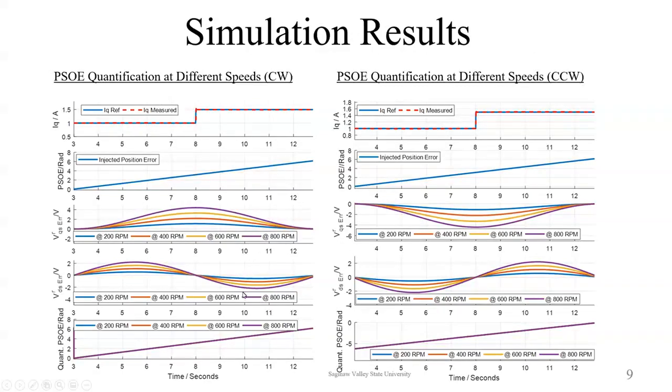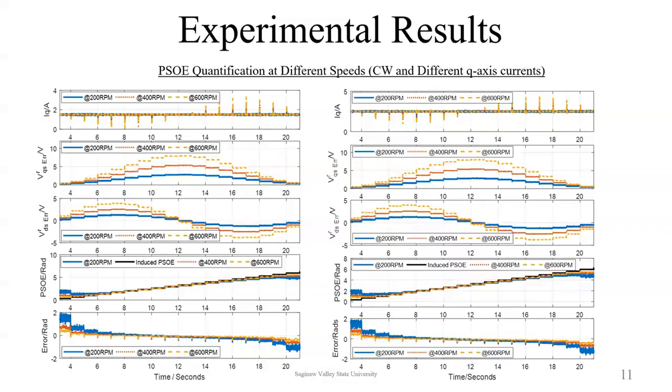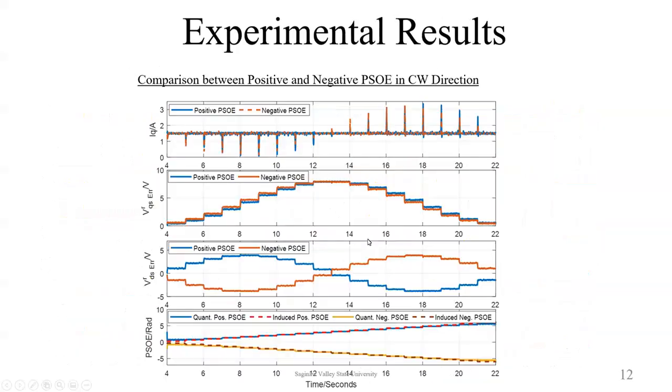Here we are showing some simulation results and experimental results. We can see that they are well correlating. We are showing with positive and negative position sensor offset error what happens in the system, and we are able to accurately quantify that, detect that, and if need be compensate for that. Thank you.